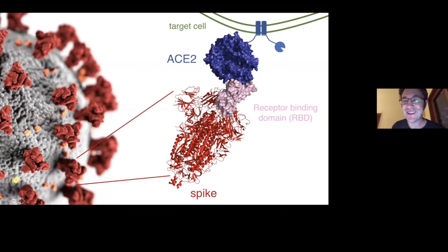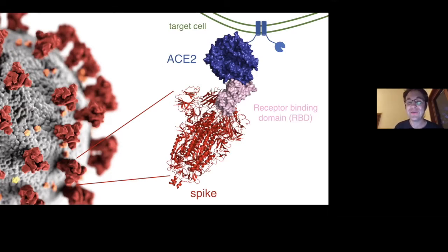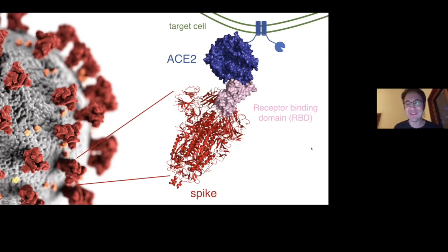Just in case anyone's curious, because I'm going to be talking about mutations to this receptor binding domain, the D614G mutation, which Betty's going to talk about in the next talk, is not part of the receptor binding domain. I'm not going to talk at all about that mutation, but for those who are interested, it might influence the dynamics of these receptor binding domains. It's an interesting mutation, but it's not going to be in the scope of my talk.